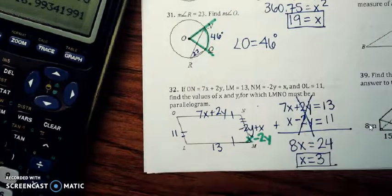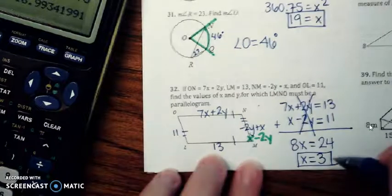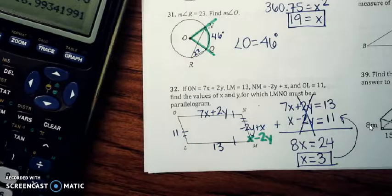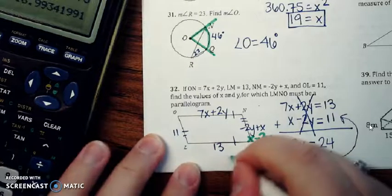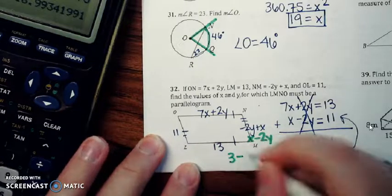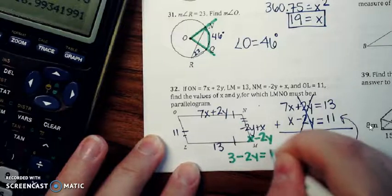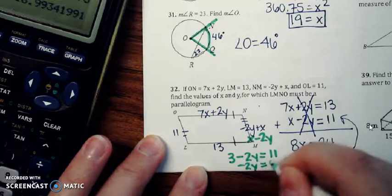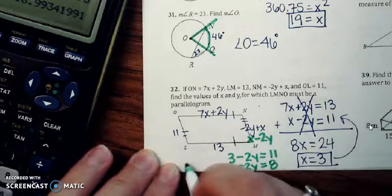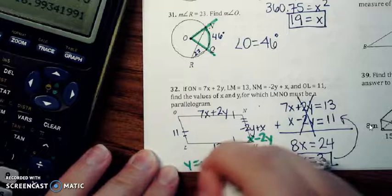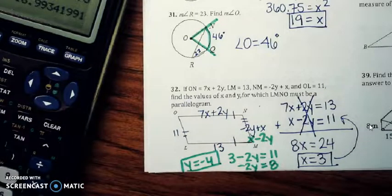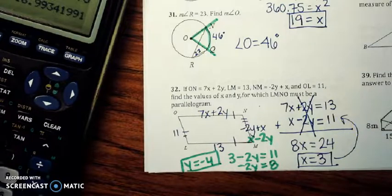Now if we want to find y, we're going to have to take and plug that back in to one of these equations here. It doesn't matter which one. So let me just plug it into the second equation. So 3 minus 2y equals 11. If we subtract 3 from both sides, I get negative 2y equals 8. So y is going to be negative 4. Opposite sides of a parallelogram there are congruent. That's what I'm using.